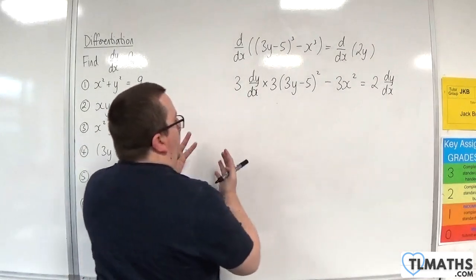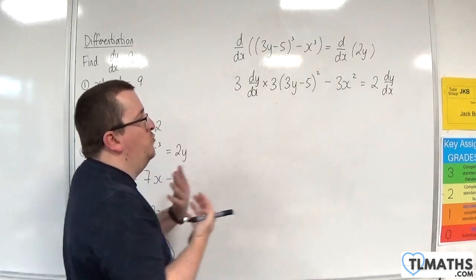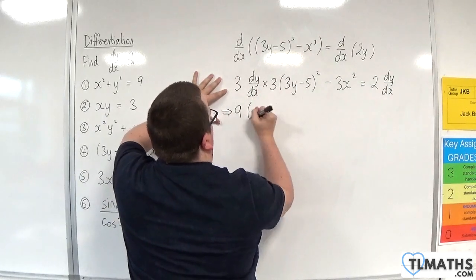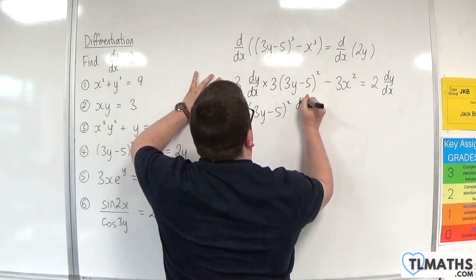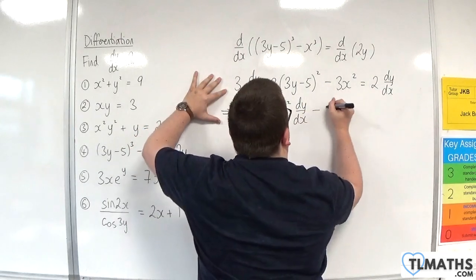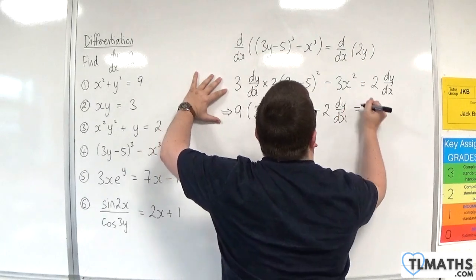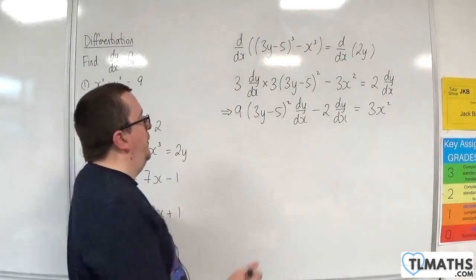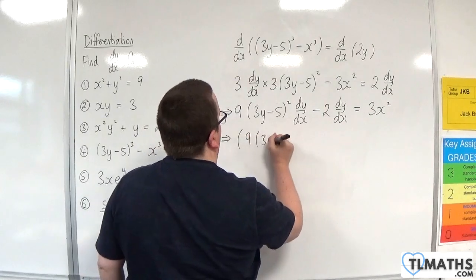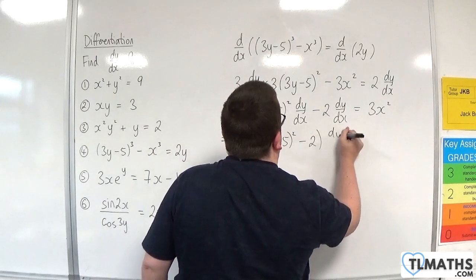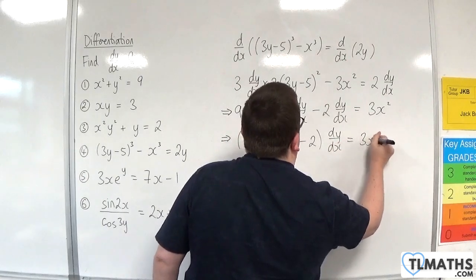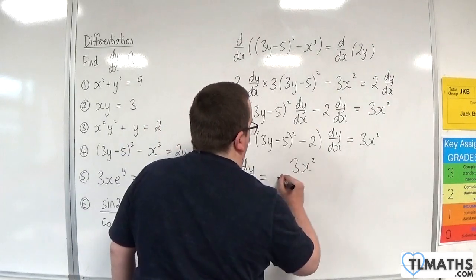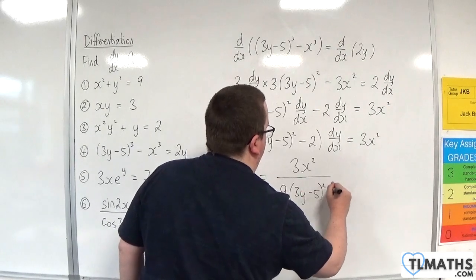Moving all the dy by dx terms to the left and 3x squared to the right: 9(3y minus 5) squared dy by dx minus 2 dy by dx equals 3x squared. Factorising the left-hand side gives 9(3y minus 5) squared minus 2, all times dy by dx, equals 3x squared. Dividing through by the bracket gives dy by dx equals 3x squared over 9(3y minus 5) squared minus 2.